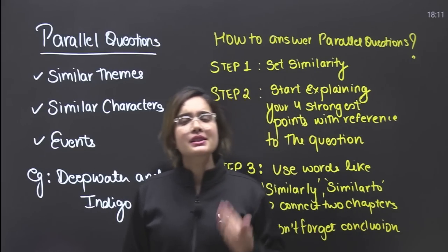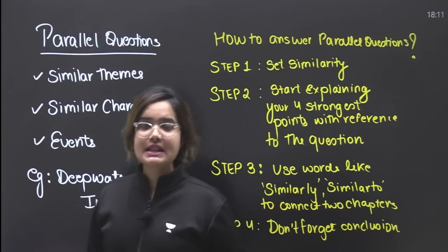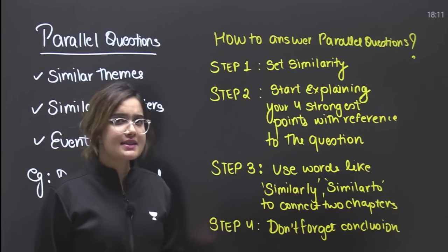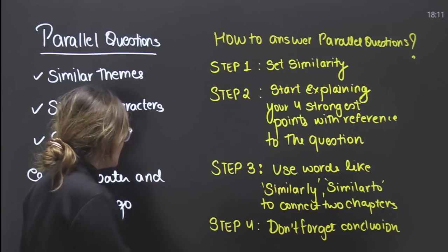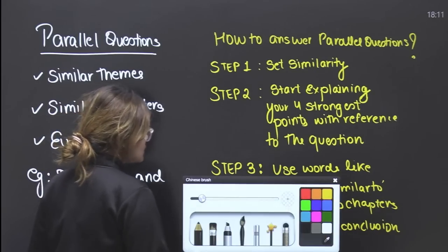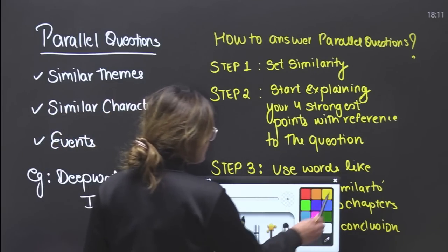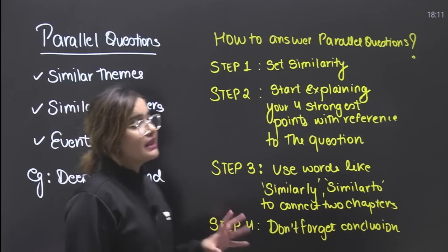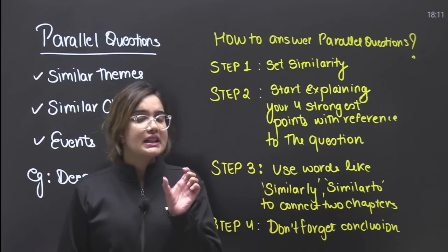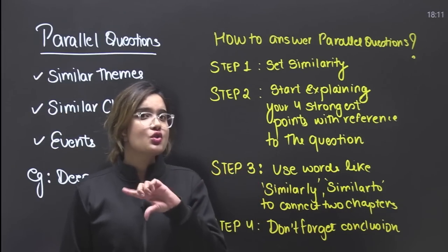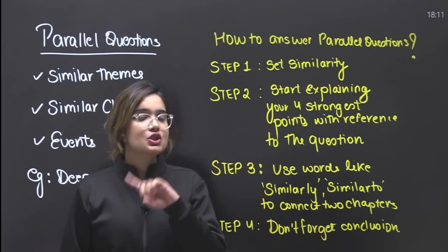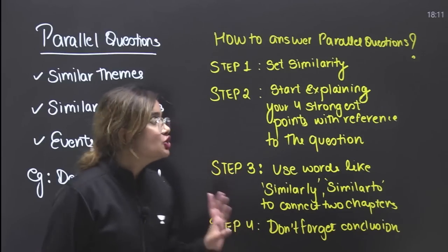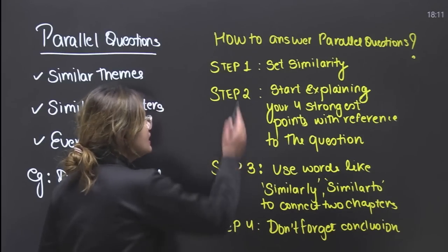How can you draw a parallel? How many such questions have we understood? Then how do we write the answer? It is very easy if you take the time to understand this once. First of all, because there is a common statement connecting two chapters, two characters, or two events, you need to establish the similarity. That means you set out the similarity between both sides.